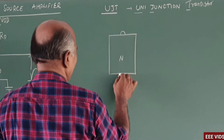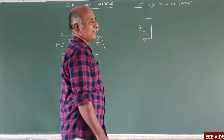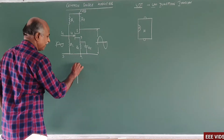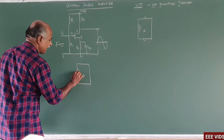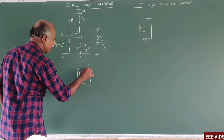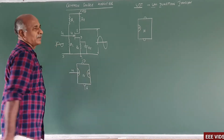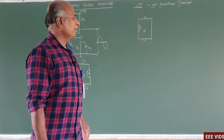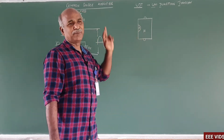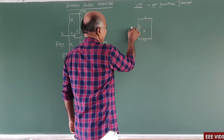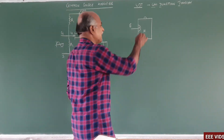Here is a terminal. This is an emitter. Here is a P-type layer added. In the case of FET, the P-layer is added on two sides — two P-layers, two P-N junctions, one terminal as gate, one as drain, one as source. Whereas in the UJT, here is an N-type bar and on one surface a single P-layer is added, forming one P-N junction. This is the emitter terminal.